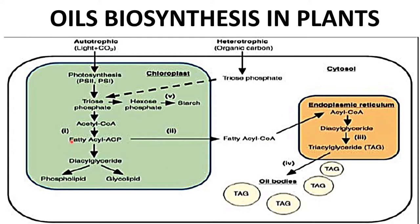Alternatively, the fatty acyl can enter this pathway or be converted into diacylglyceride in the chloroplast itself, and then it will be converted into either phospholipid or glycolipid, which helps in membrane preparation.